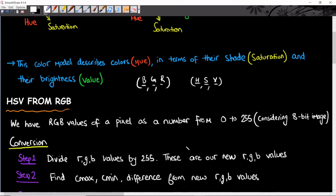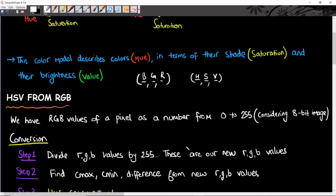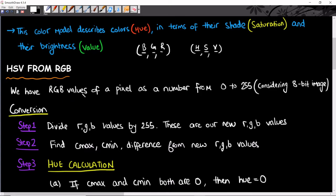First of all, how do we get HSV values from RGB values? Our input is RGB values of a pixel as a number from 0 to 255, considering our standard 8-bit image. You can iterate this process for all the pixels until you get all the HSV values for all pixels in your image.